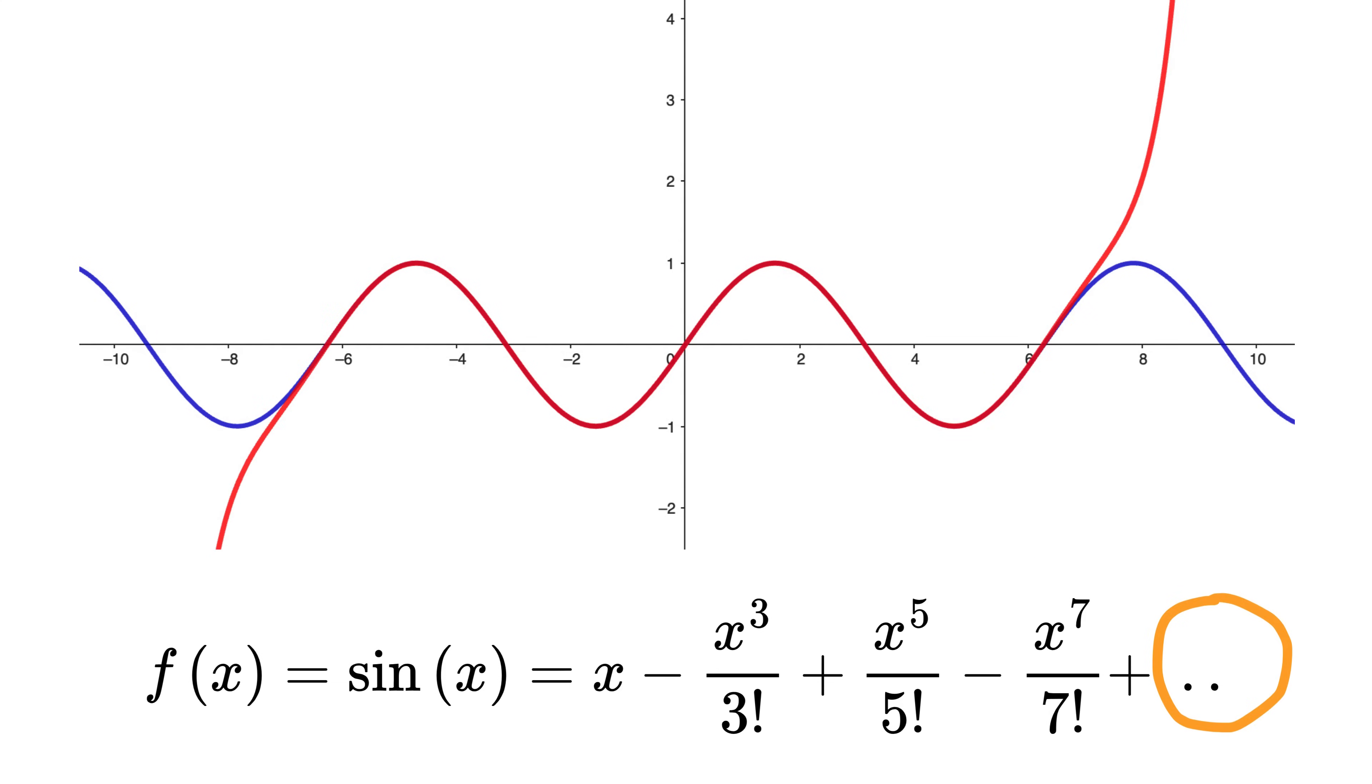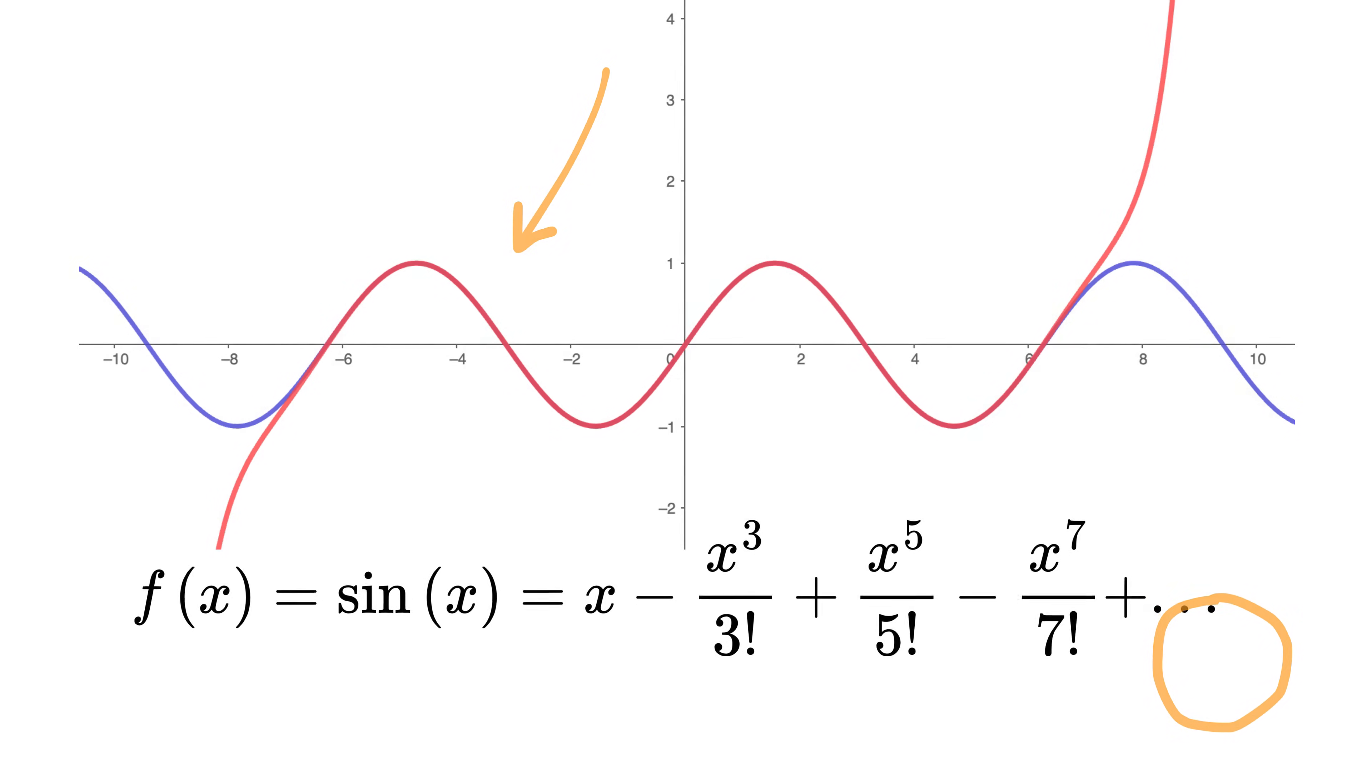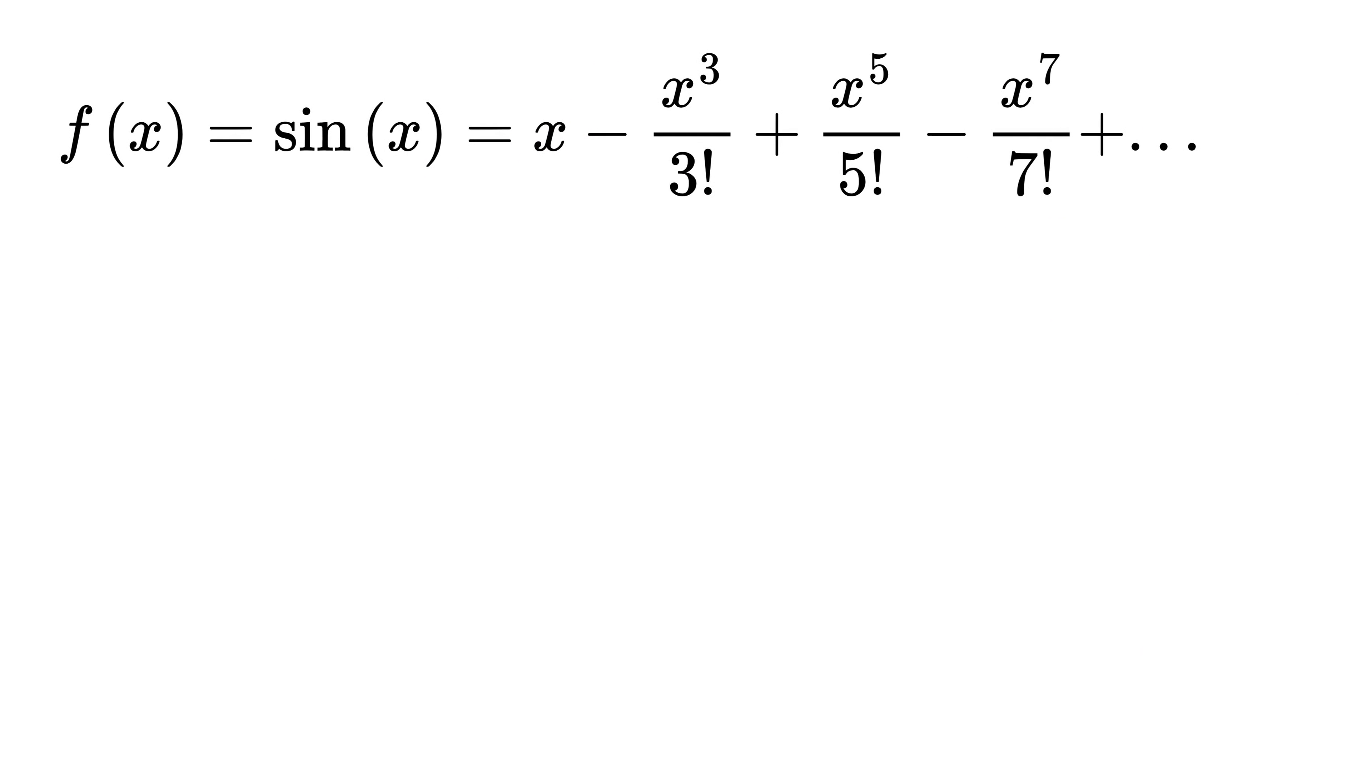Here comes the magic: as we keep adding more and more of these terms, the resulting curve starts to look more and more like the actual sin(x) wave. It's as if each new term is correcting the shape, pulling it closer to the real wave. And surprisingly, if you keep doing this infinitely—keep adding these polynomial terms forever—you actually get the exact sin(x) curve.